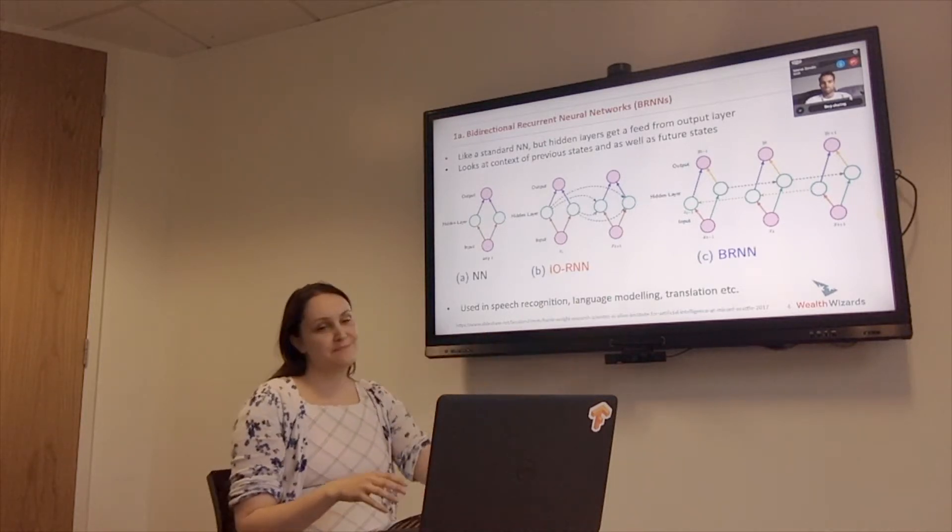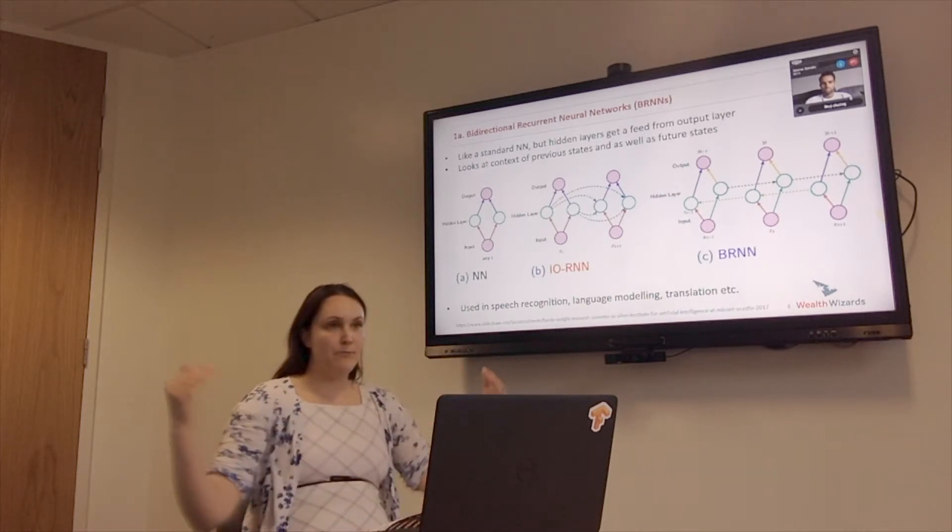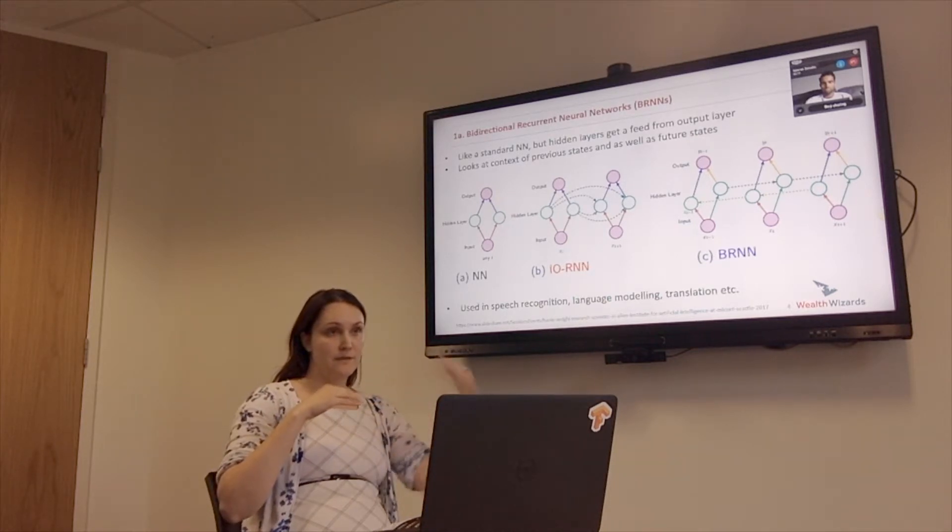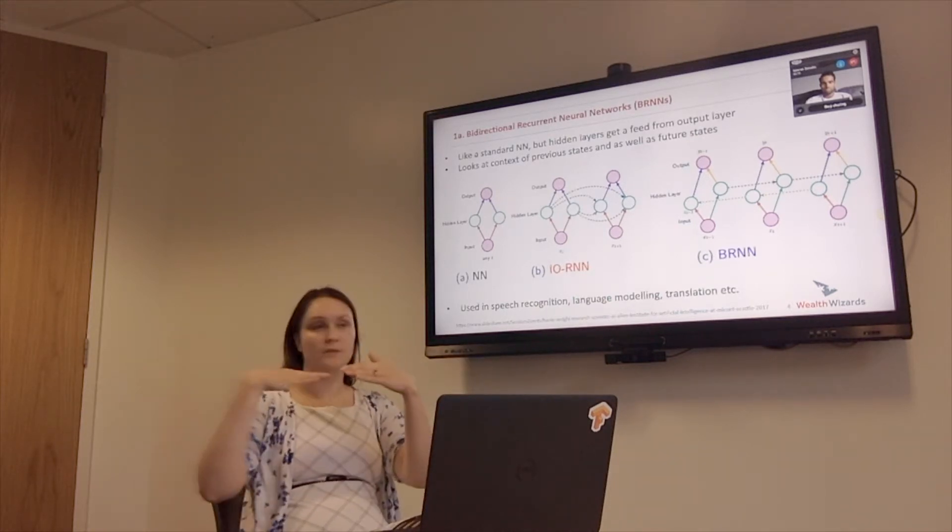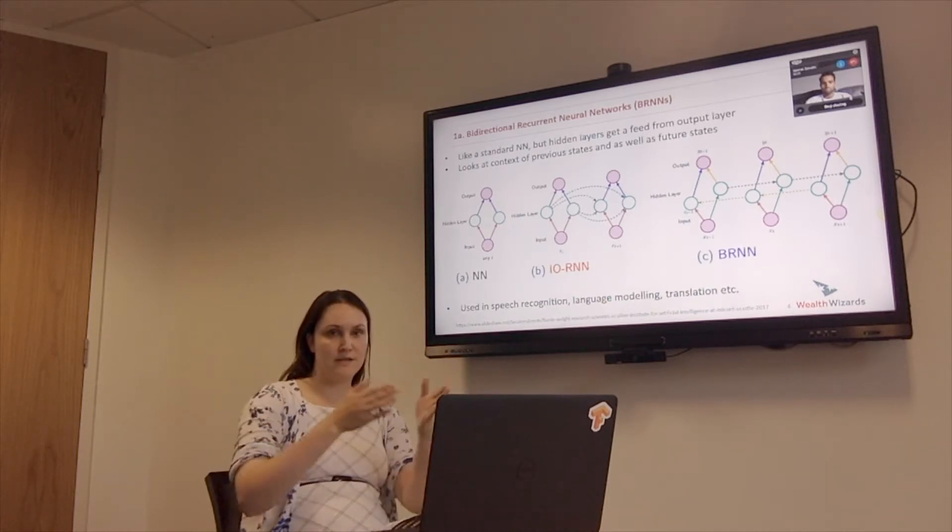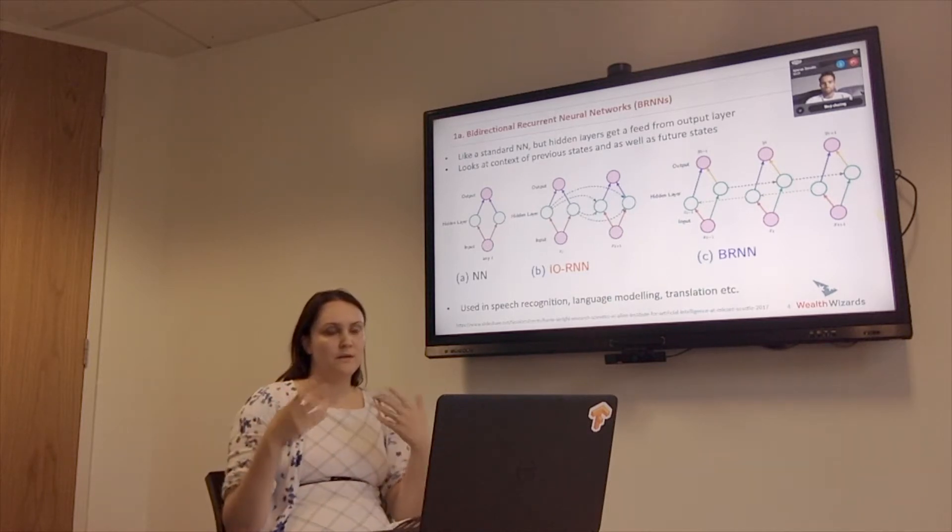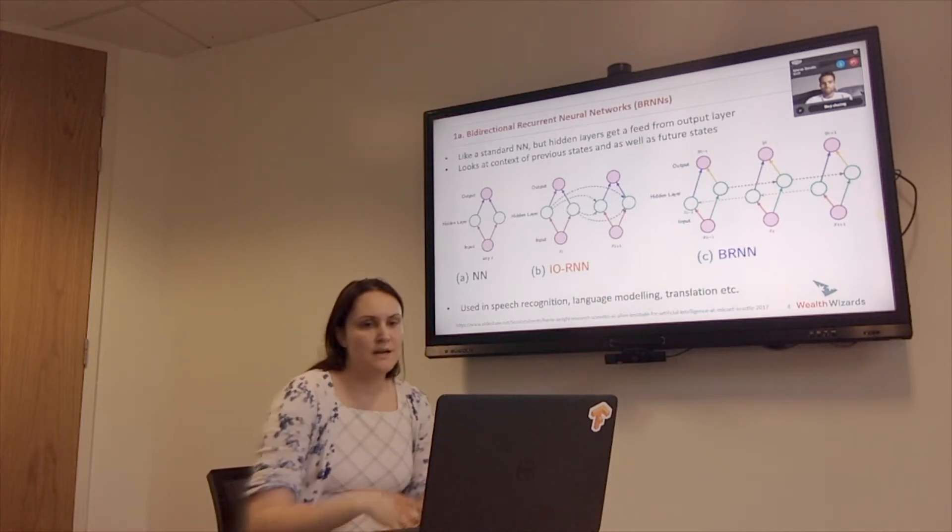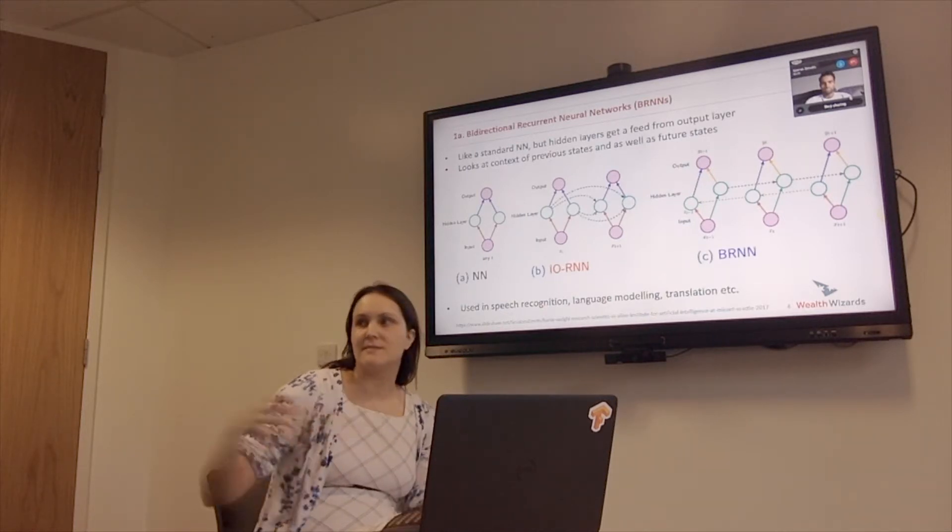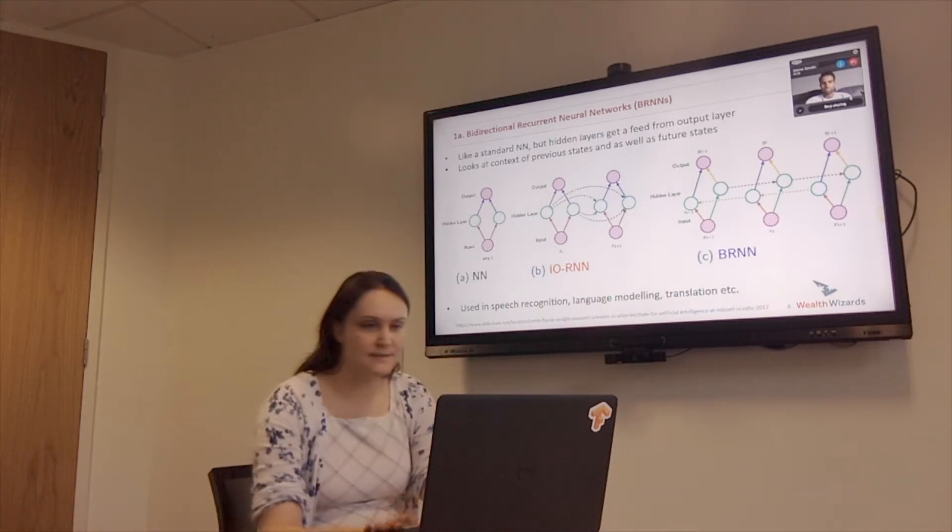And then a bidirectional recurrent network is similar but it's actually going from both directions at once. So it's looking from the beginning of the word and from the end of the word. And so you've got the context of the whole word for each sentence around each letter that you're looking at as an input, which is pretty cool. That becomes more useful and more important when you're looking at words in sentences rather than letters in a word, I think. But hopefully that makes sense.